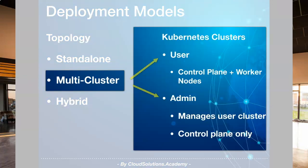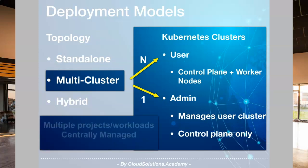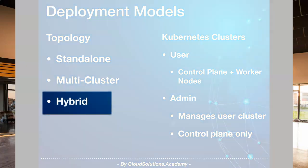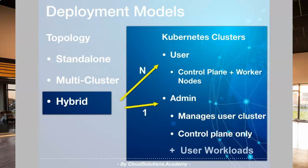The multi-cluster deployment model consists of one admin cluster and multiple user clusters. It lets you manage multiple user clusters across workloads, and is usually preferred where you have multiple project teams with different workload requirements that need to be executed independently but centrally managed securely through an admin cluster. The hybrid cluster deployment model is essentially the same as multi-cluster, with the added ability to run user workloads on the admin cluster as well, giving flexibility to reuse the admin cluster environment to run additional workloads based on your infrastructure usage.